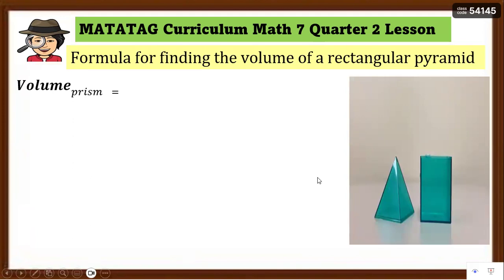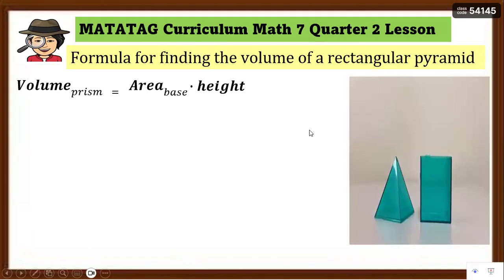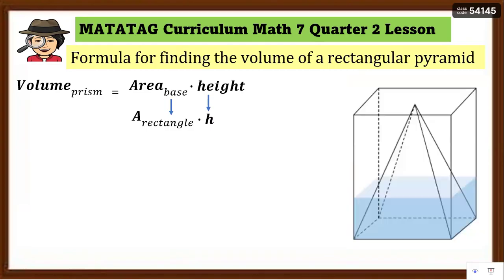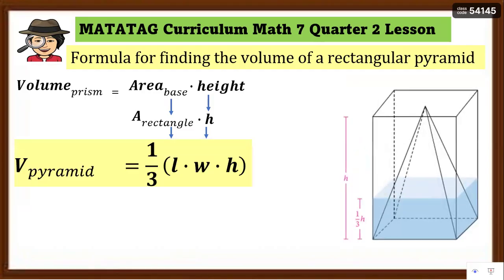So it takes three pyramid-fulls to fill the prism. The volume of a prism is simply the area of the base times the height. The area of the base equals the area of the rectangle — length times width — multiplied by height. That is the volume of a prism. Now, the relationship: since the pyramid fills one-third of the prism, the volume of the pyramid is one-third times the area of the base times height. Therefore, the formula is: V = (1/3) × length × width × height.